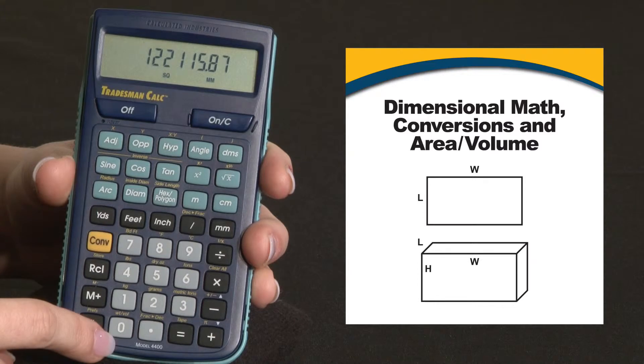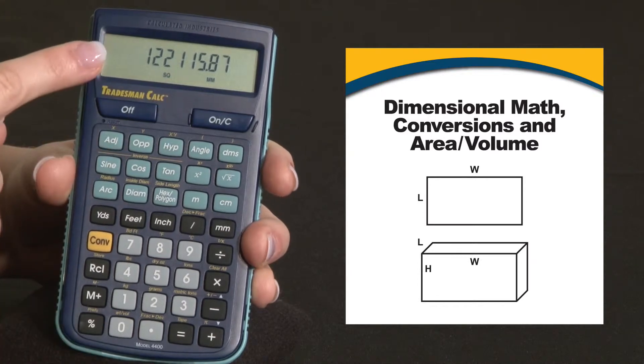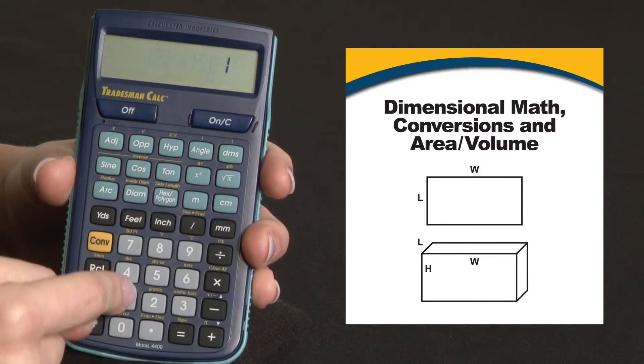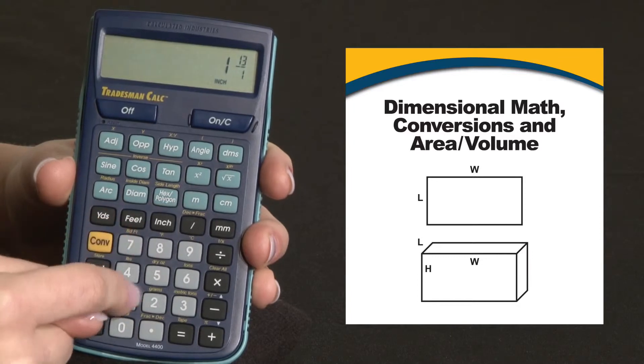To find a volume, we just multiply by the height, so let's take the area we just calculated and multiply by a height of 1 inch 13 sixteenths.